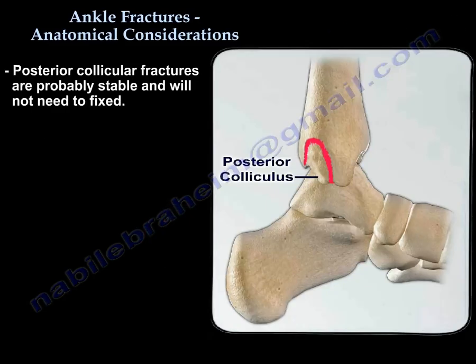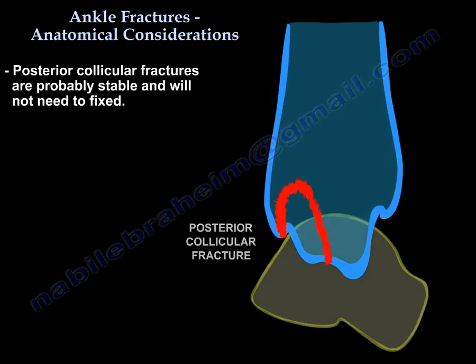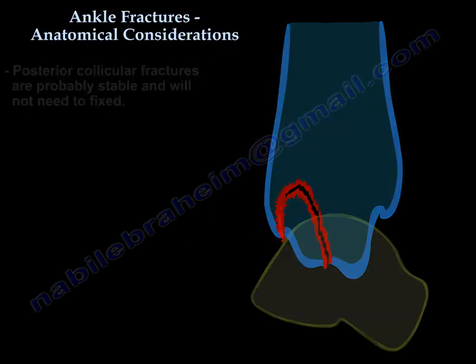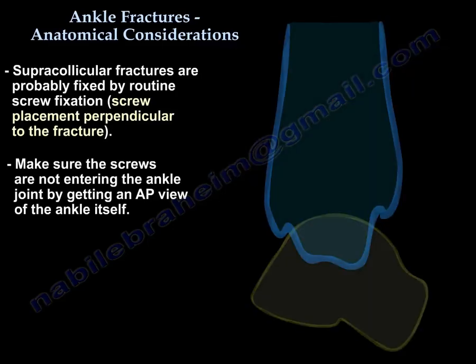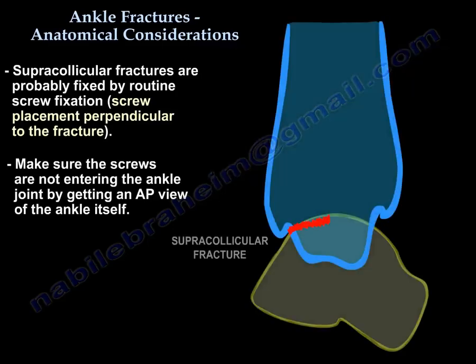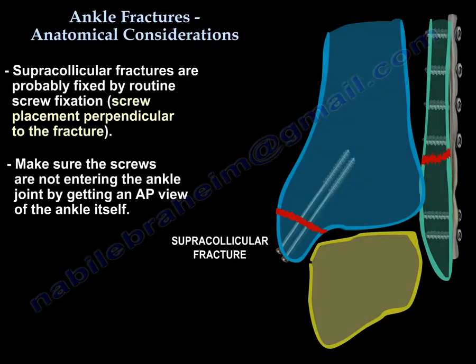If it is a posterior collicular fracture, it is probably stable and may not need fixation. If it is a supracollicular fracture, you will likely use screws perpendicular to the fracture, and make sure you are not inside the joint by getting an AP view of the ankle.